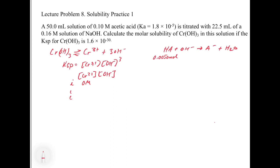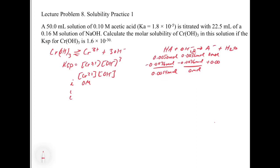Moles of OH⁻ = 22.5 mL × 0.16 M = 0.0036 moles. We start with 0 moles of A⁻. The limiting reagent is OH⁻ since it has fewer moles. After reaction: 0 moles of base remain, 0.0014 moles of HA remain, and 0.0036 moles of A⁻ are produced.